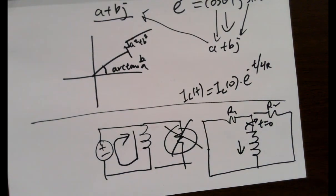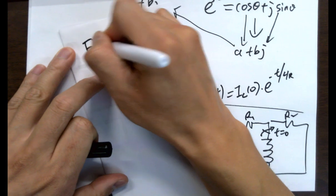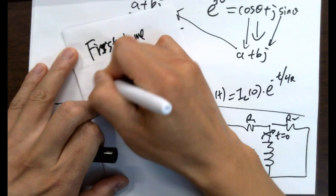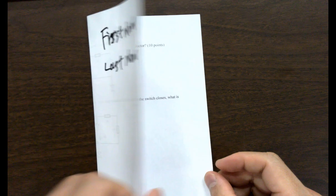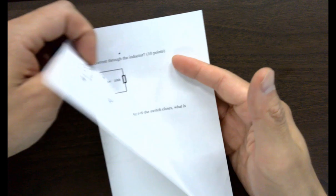Do this, fold it like this, and put your name on the top. Fold it this way — because students sometimes put the name at the bottom. Do exactly like this to make grading easier.